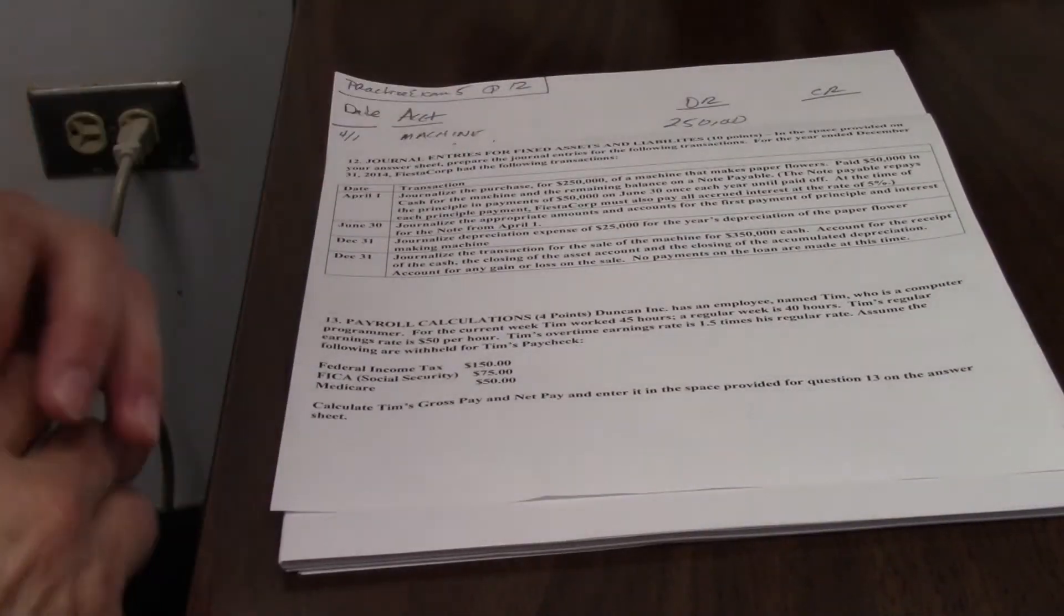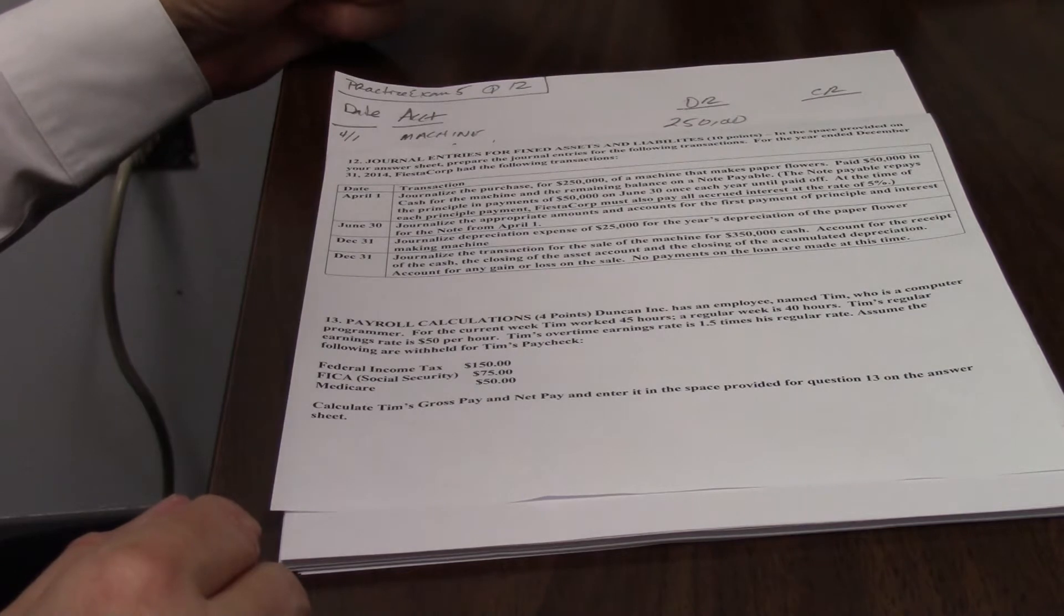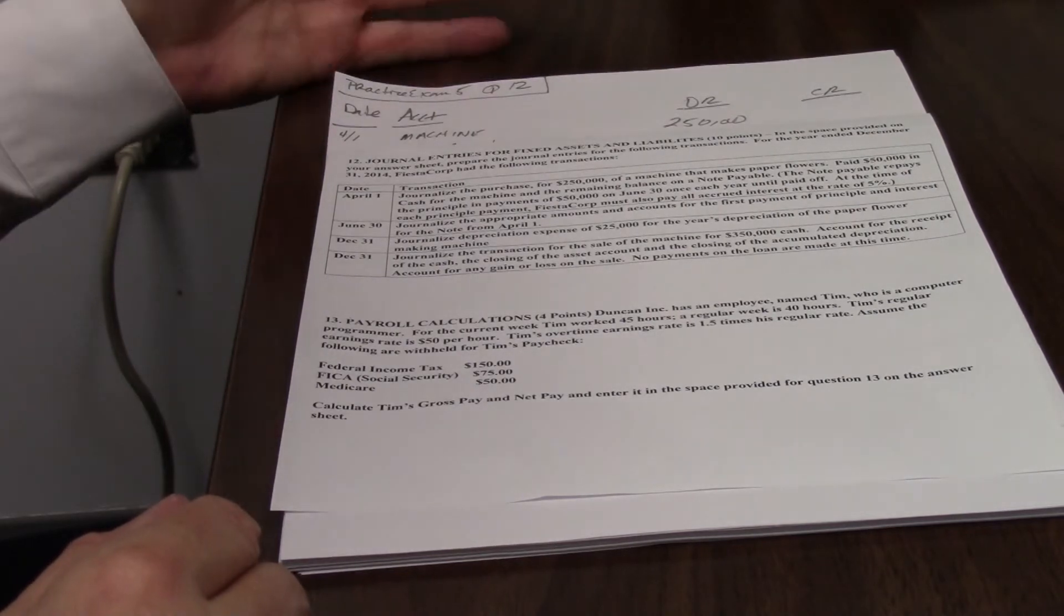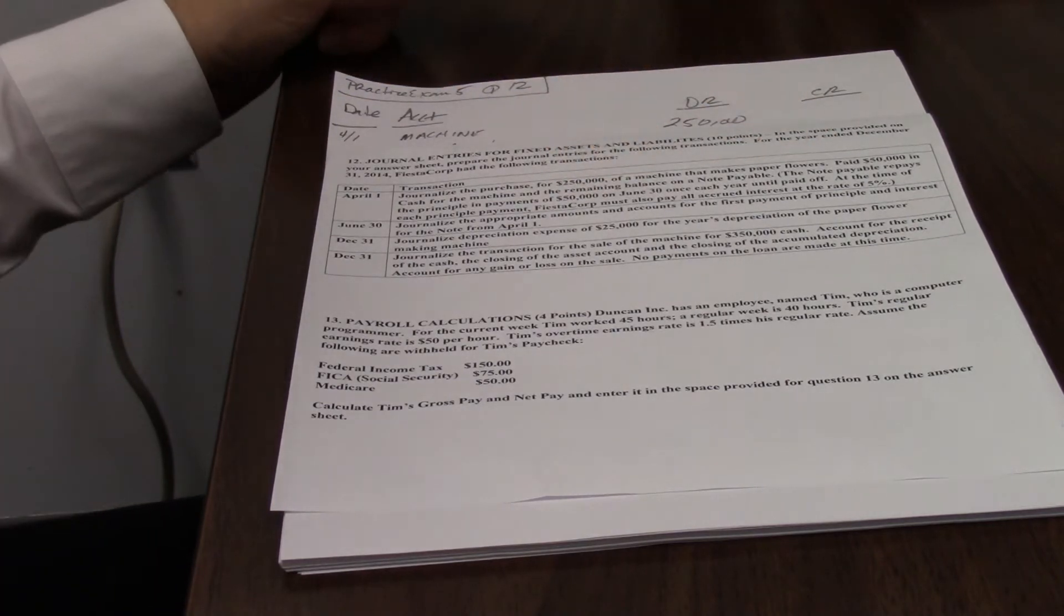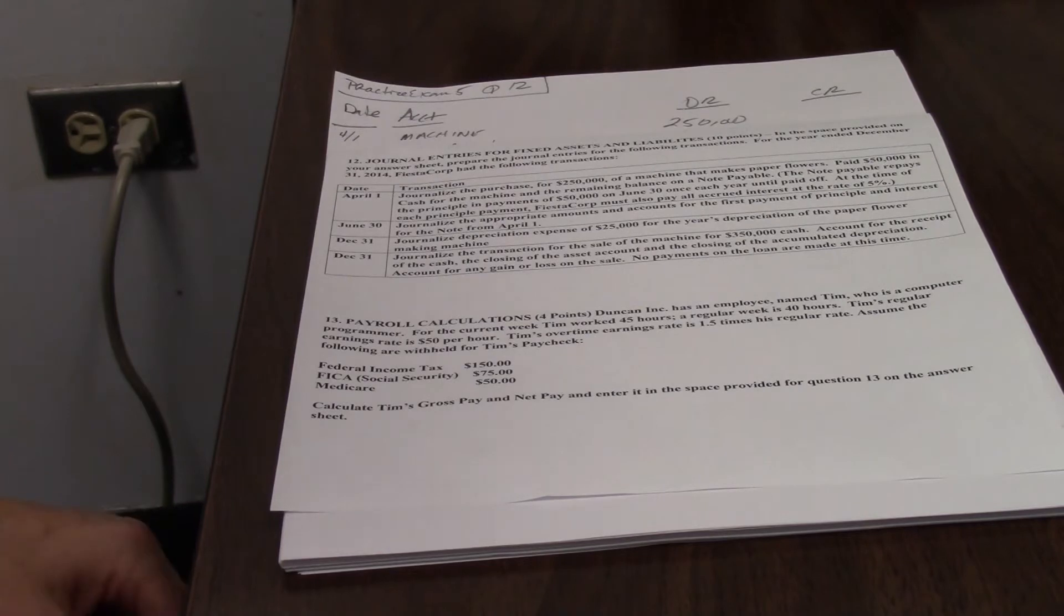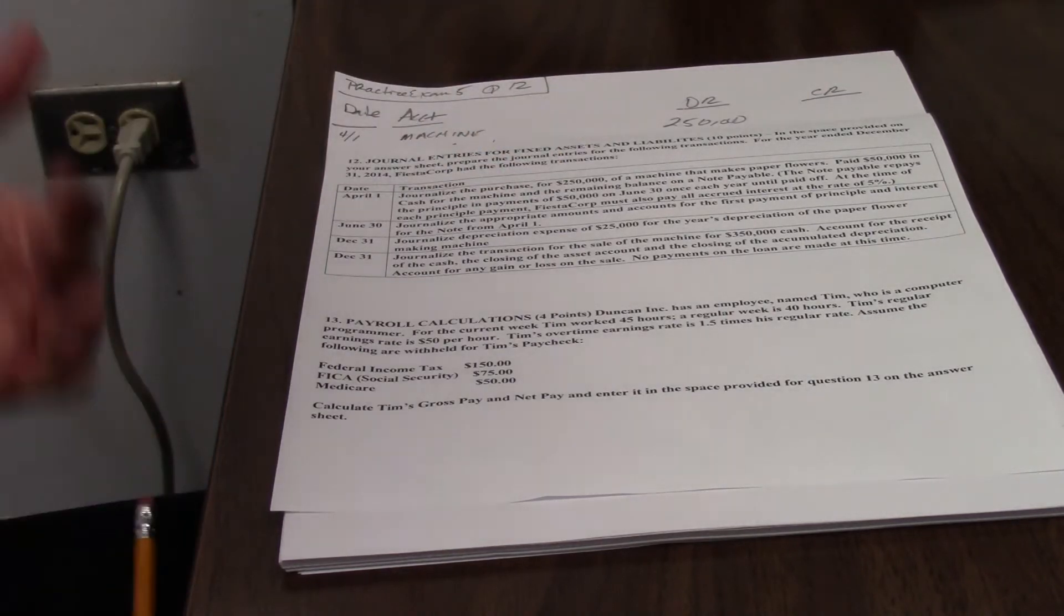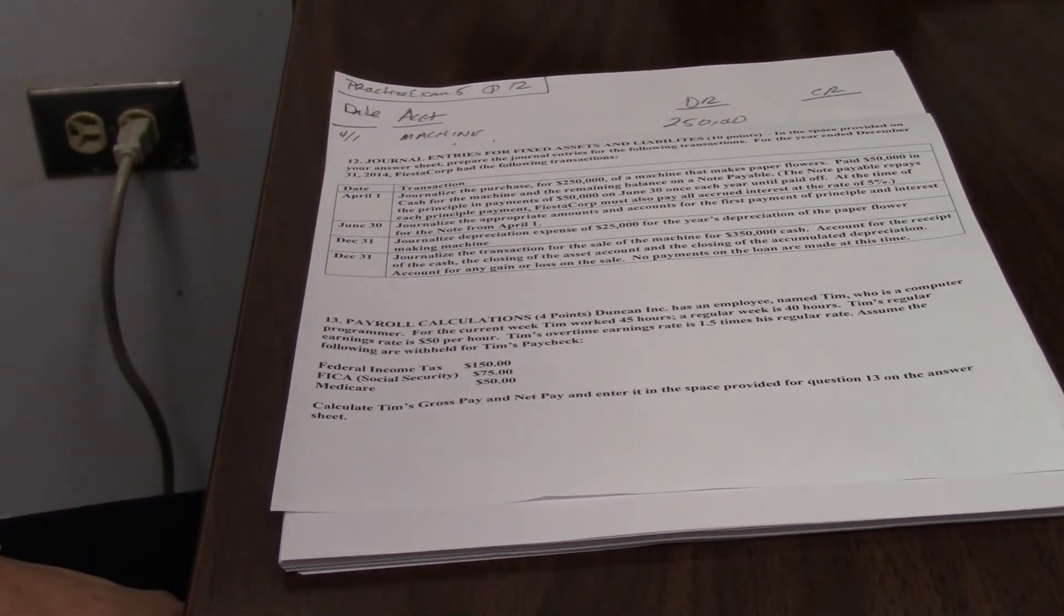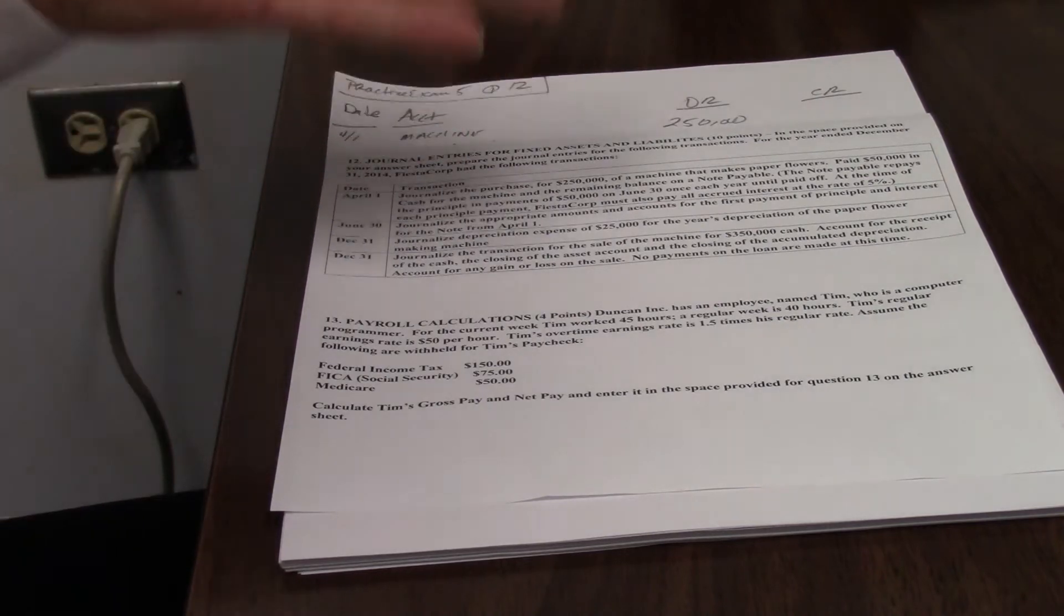Now, the next thing that happens is we need to journalize the amounts and accounts for the first payment of principal and interest. So this note has a payment due every 90 days, June 30th, and on June 30th once each year until it's paid off. So that means June 30th comes around, we owe them some money. And apparently we're going to pay them a principal payment of $50,000. But we also owe them interest, 90 days worth of interest.